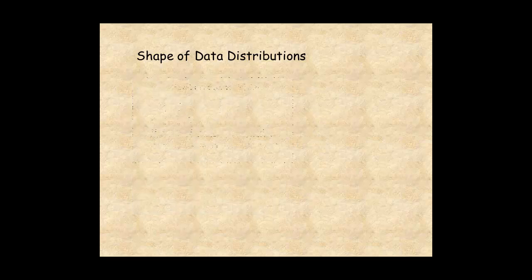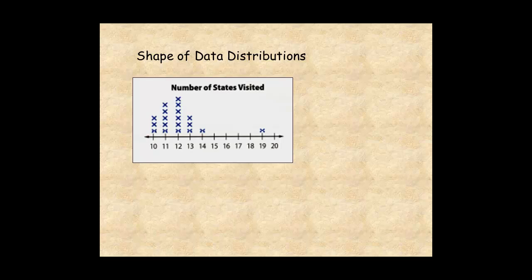This line plot shows the number of states visited by students in a class. The data are not symmetric, and there's an outlier. In this case, calculate the median and inner quartile range. Use these values to describe the center and spread of the data.